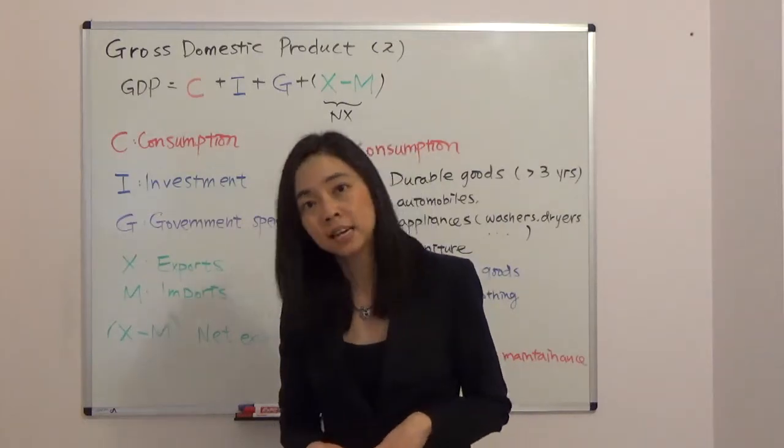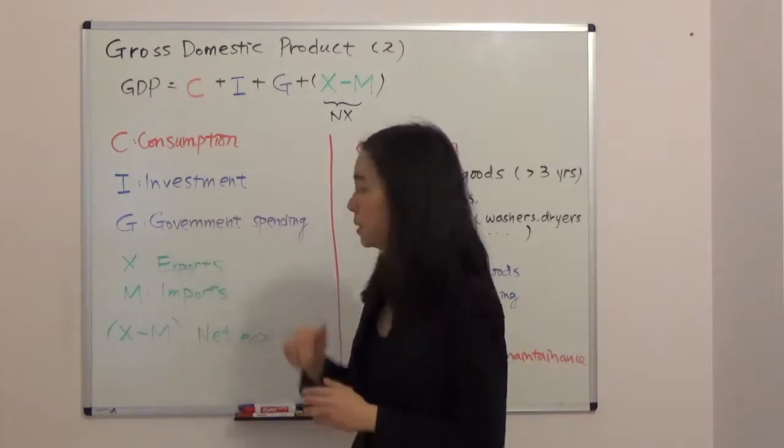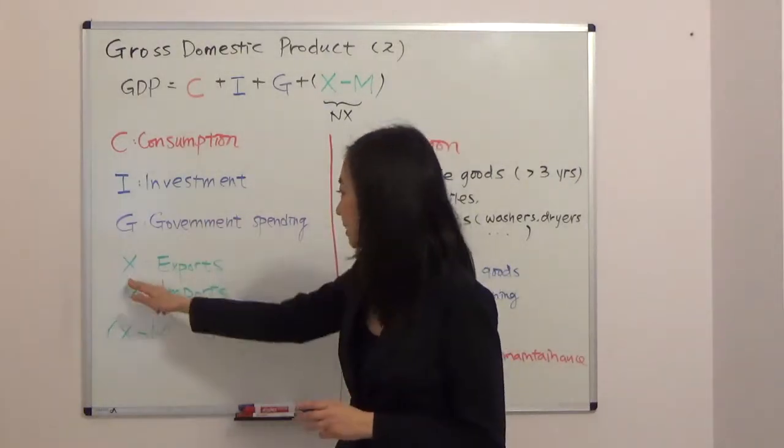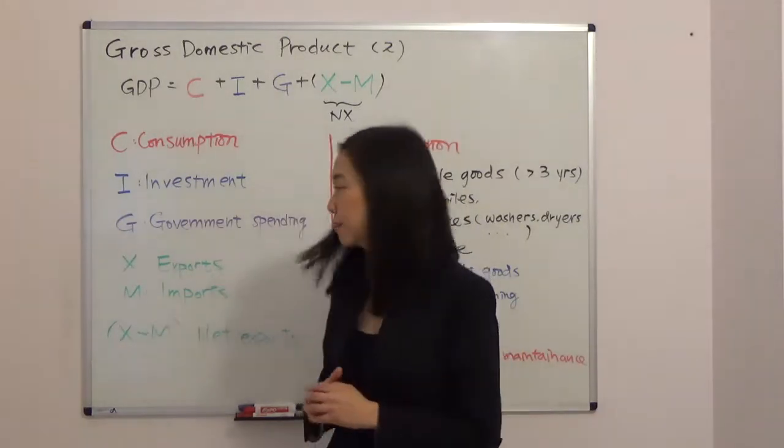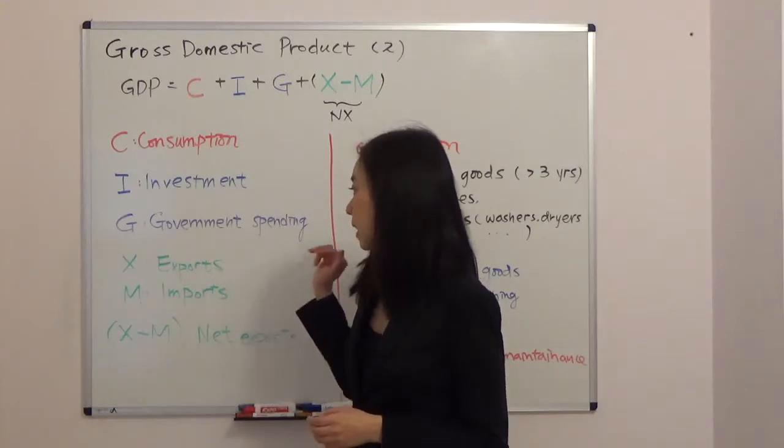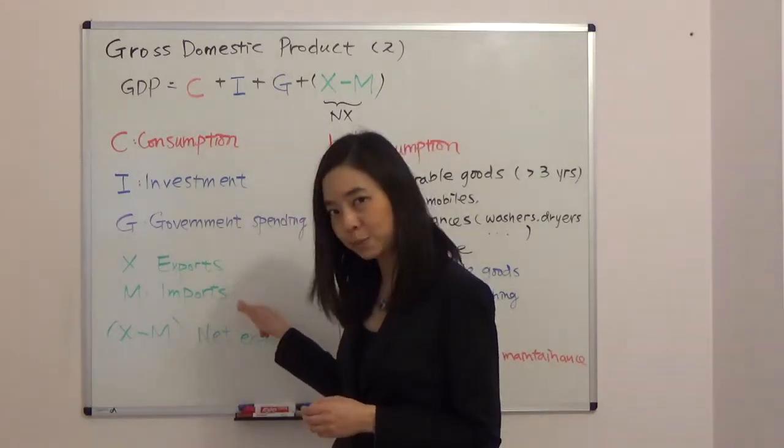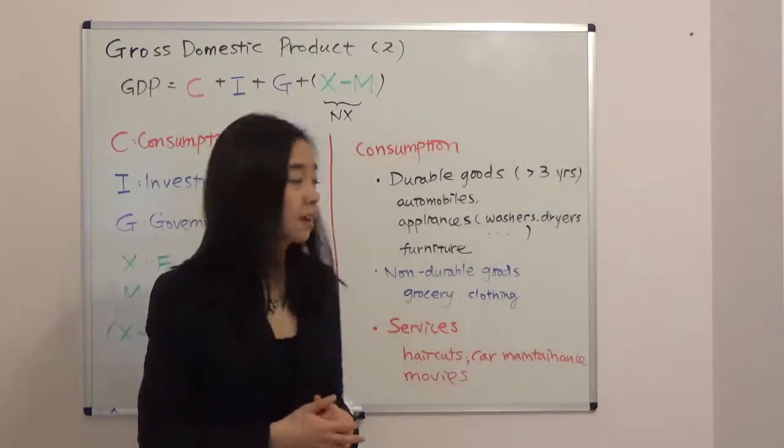Plus X minus M. C stands for consumption, I stands for investment, G stands for government spending, X stands for exports, and M stands for imports. Or you can put X and M together, so X minus M equals exports minus imports, which gives you net exports. Today we're going to focus on the first component in GDP, which is consumption.